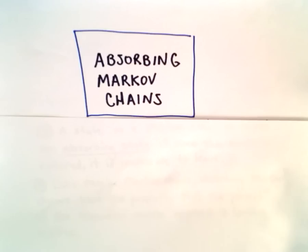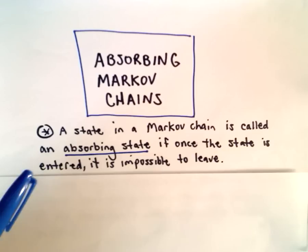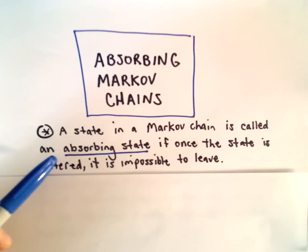In this video we're going to start talking about absorbing Markov chains. To start, we're going to talk about absorbing states. A state in a Markov chain is said to be an absorbing state if, once the state is entered, it's impossible to leave. I always thought about them as being like little black holes — once you get trapped inside of there, there's no way you're getting out.